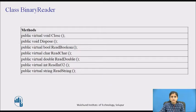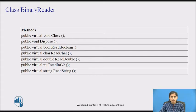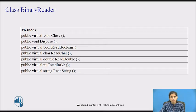Now we'll see the commonly used methods of BinaryReader class. The Close method closes the current reader and the underlying stream. The Dispose method releases all resources used by the current instance. The ReadBoolean method returns a boolean — it reads a boolean value from the current stream and advances the current position by one byte. The ReadChar method returns a character and reads the next character, advancing the position in accordance with the encoding used.